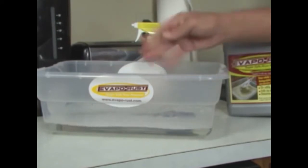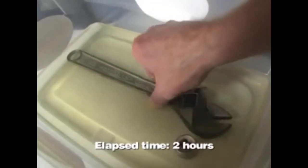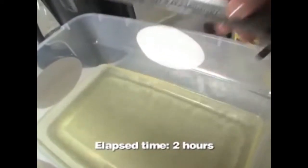Evaporust is simple to use. Just soak the rusted item in Evaporust for two hours, up to overnight for heavily rusted articles. Only the rust is removed. Unrusted steel will not be damaged, even if left in for over a week.